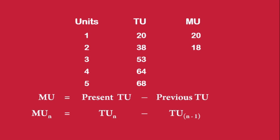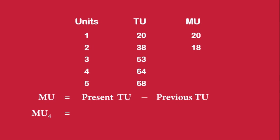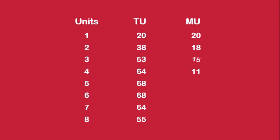Using this formula, let us find the Marginal Utility of the fourth Apple. Marginal Utility of the fourth Apple equals Total Utility of 4 apples minus Total Utility of 3 apples, which is 64 minus 53 equals 11 units. Similarly, we can calculate the Marginal Utility of other units.